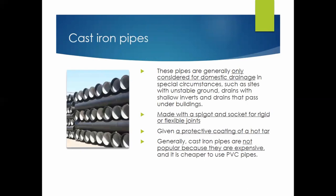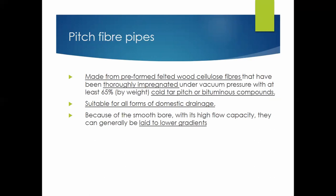Cast iron pipes are generally only considered for domestic drainage. They are made with a spigot and socket with rigid or flexible joints and are given a protective coating of hot tar. They are not popular because they are expensive — PVC is cheaper. Pitch fiber pipes are made from preformed felted wood cellulose fiber, thoroughly impregnated with cold tar or bitumen compounds that protect the wood. They are suitable for all forms of domestic drainage and can be laid to lower gradients because of a smooth bore and greater flow capacity.